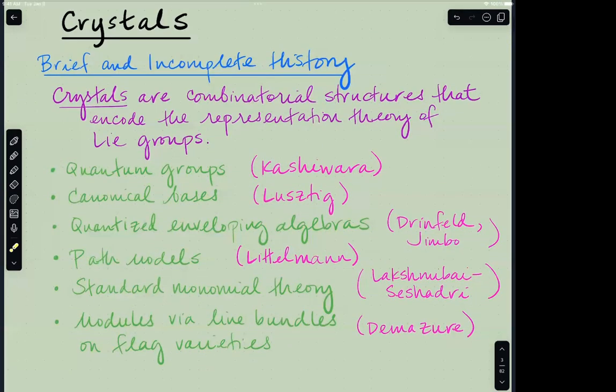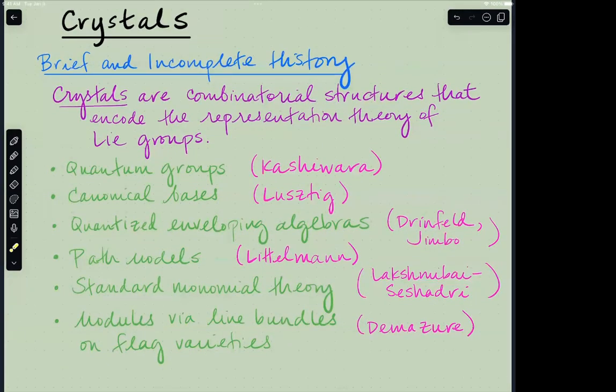I'll first start with a brief and extremely incomplete history of crystals focusing on the origins and the kind of work that was happening around the beginnings of the formalization of the notion of a crystal. But crystals in broad strokes are combinatorial structures which are defined to encode representations of Lie groups and Lie algebras in particular. So work starting around the 1990s was happening. I would say strong origins are due to Kashiwara, who was working on representations of quantum groups really around 1990. And then at the same time but independently, Lusztig was doing work on his canonical bases, which turned out to be related to crystals.